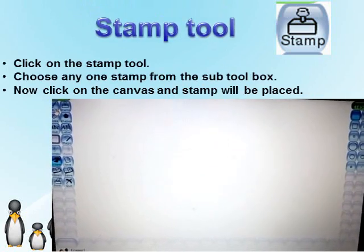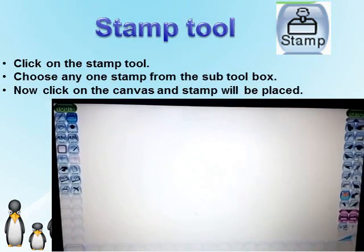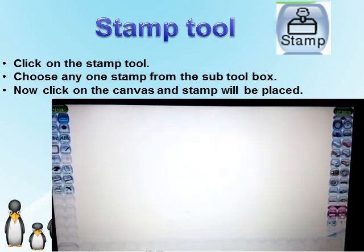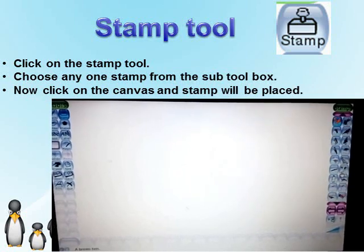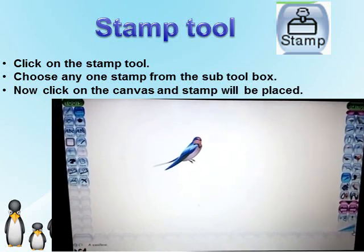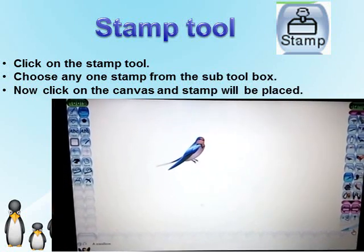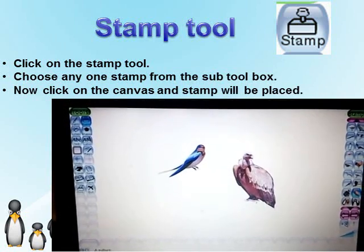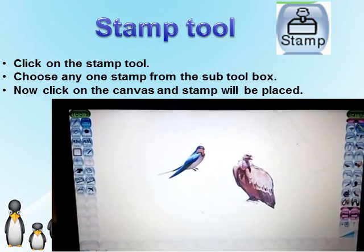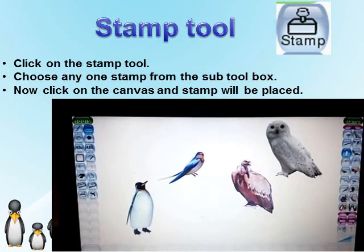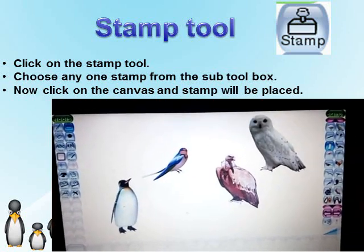Stamp Tool: It is a simple tool used to put a stamp and add images in your drawing. TuxPaint already has some inbuilt stamps. To use it, click the stamp tool and choose any one stamp from the sub toolbox. For more stamps, click the right or left arrow, then select your desired stamp. You can increase or decrease the size of the stamp using the slider bar just above the color palette. Click on the canvas and the stamp will be placed. You can also use the mirror image of the selected stamp by choosing the mirror option.